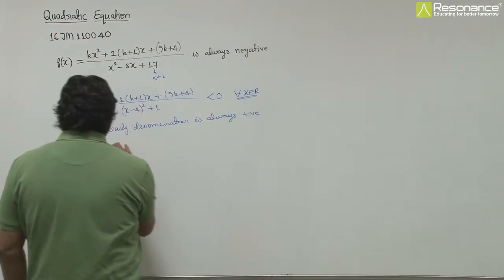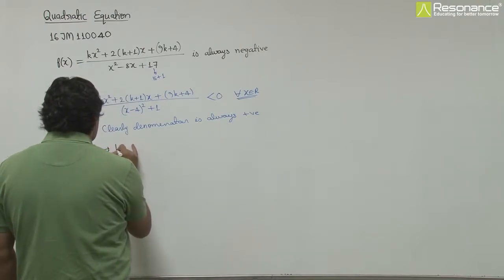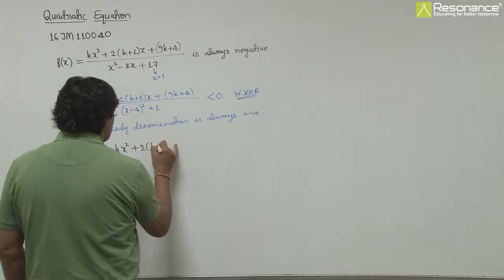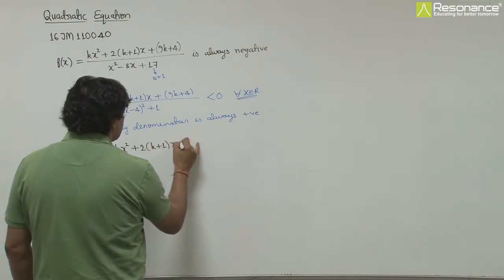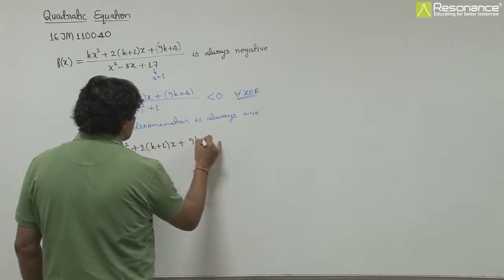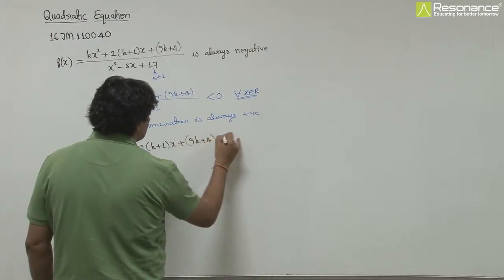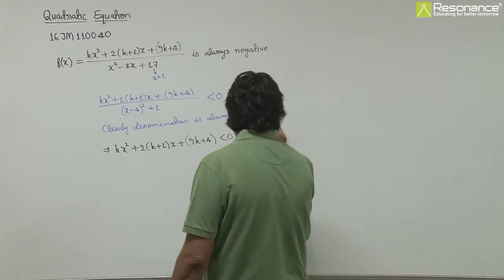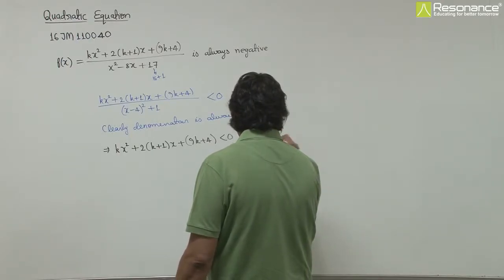That means kx² + 2(k+1)x + 9k + 4 must be negative for all x belongs to R.